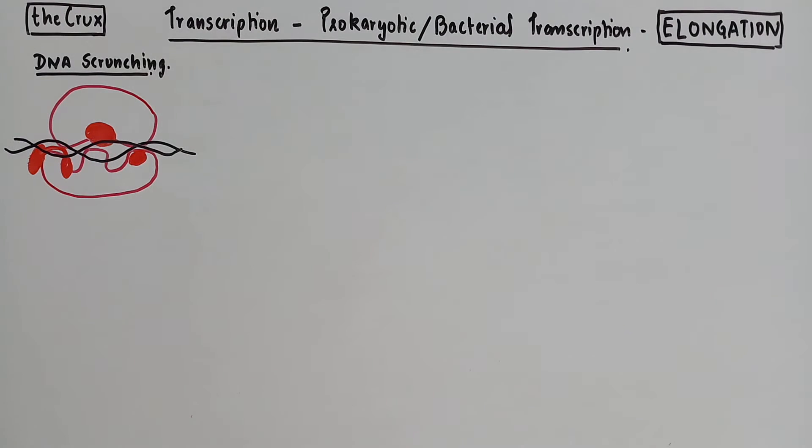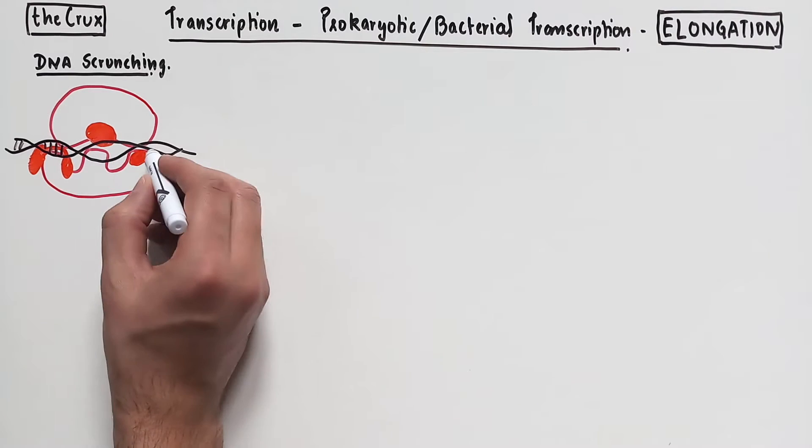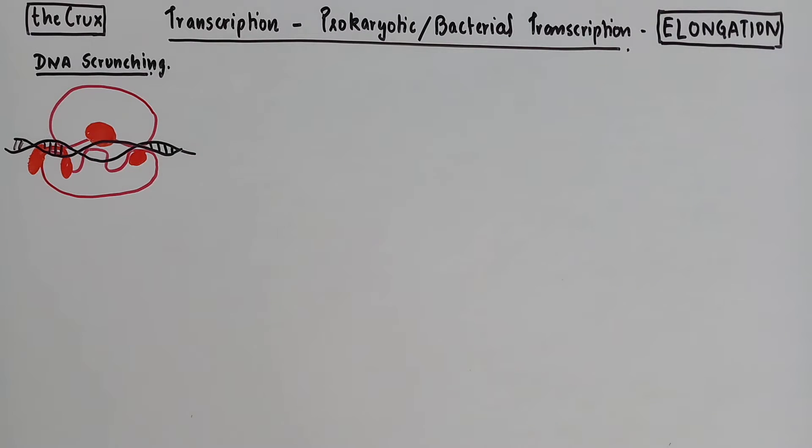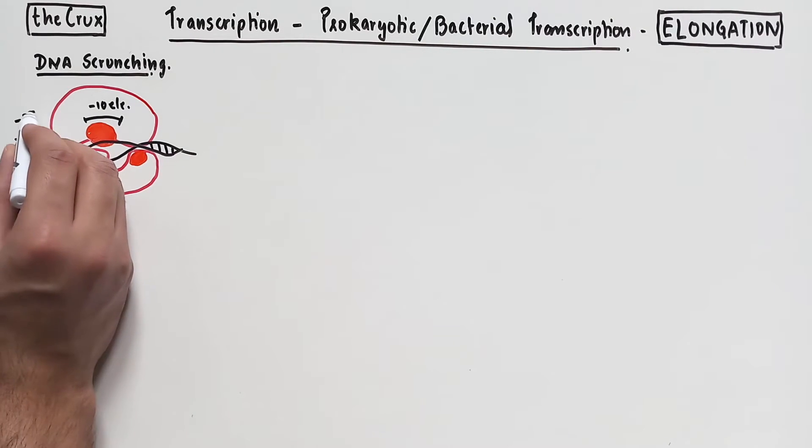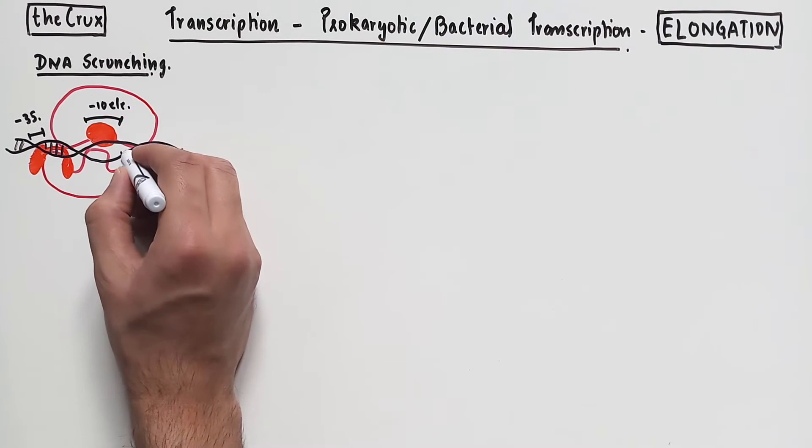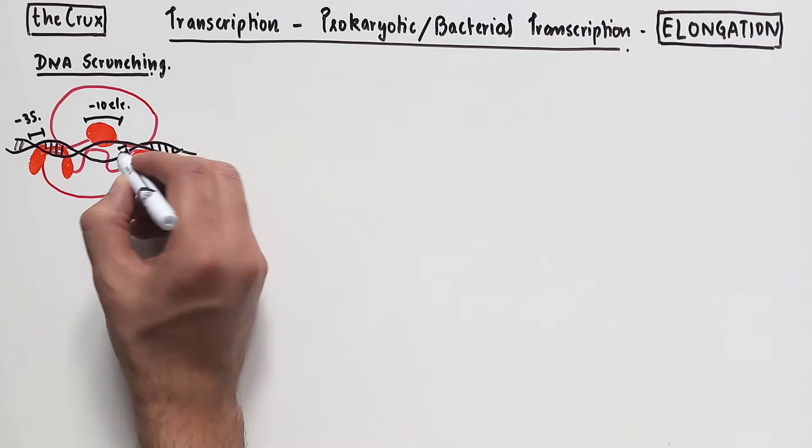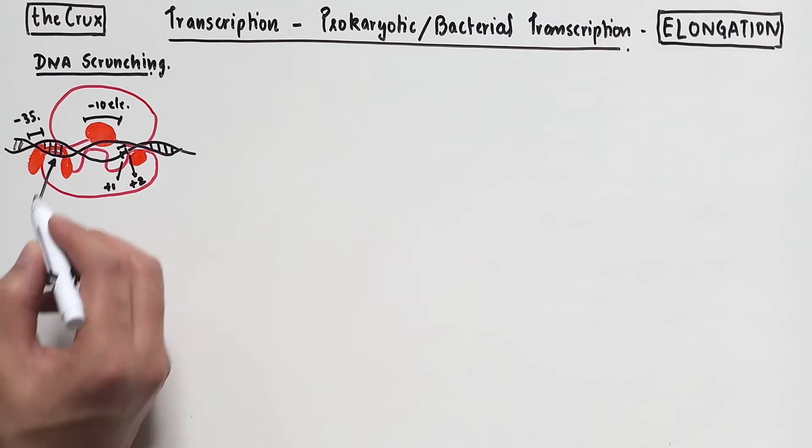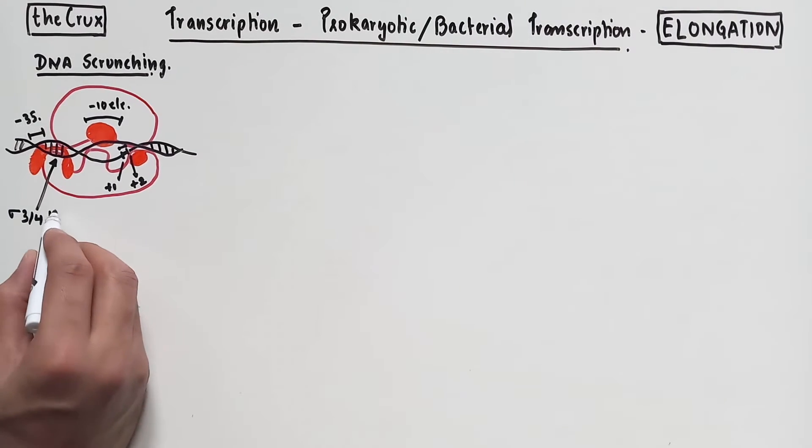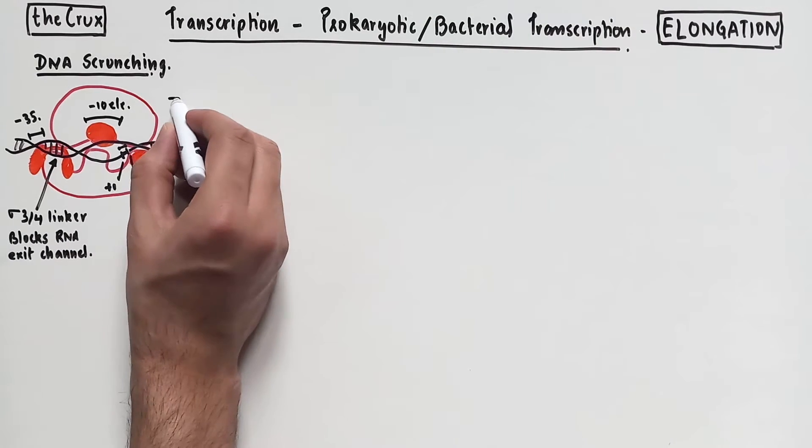So in the ternary complex, we see that the sigma 2 domain of the sigma factor is bound at the minus 10 element and its domain 4 makes contact with the negative 35 element. In addition, we have the plus 1 and plus 2 sites occupied at the edge of the transcription bubble. Now importantly, in the ternary complex, the sigma 3-4 linker is actually blocking the RNA exit channel.